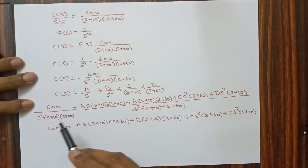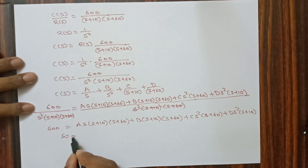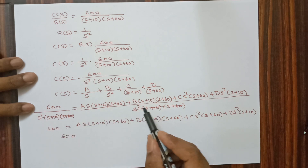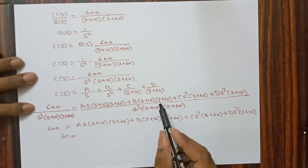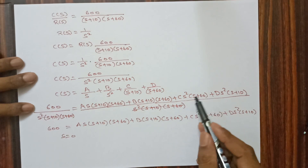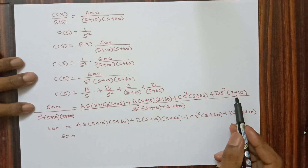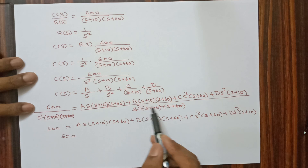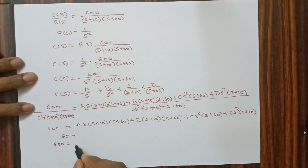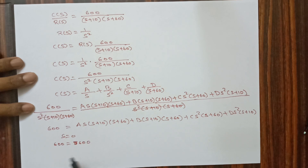First, setting s = 0: the A, C, and D terms all become zero, leaving 600 = B × 10 × 60 = 600B. Therefore B = 1.